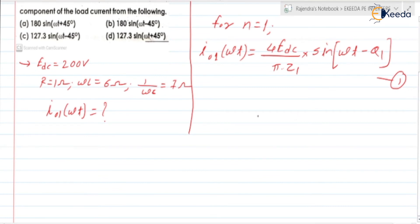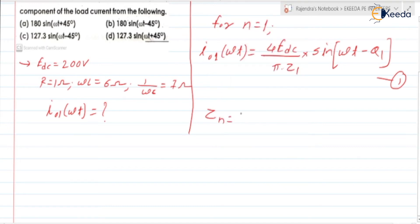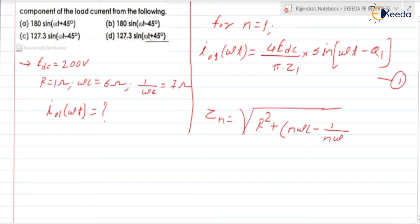Now we can find Z₁ and θ₁. For an RLC load, Zₙ is equal to square root of [R² + (N·ωL − 1/(N·ωC))²]. The capacitive reactance term becomes 1/(N·ωC) because the frequency of the Nth harmonic is N·ω.